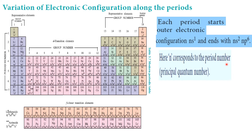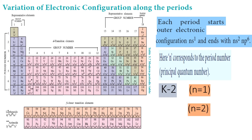The general configurations are ns1, ns2, ns2 np6, where n corresponds to the period number — also called the principal quantum number. The principal quantum number N indicates the energy level of the electron in the atom. When N equals 1, that is the K shell, with a maximum of 2 electrons. When N equals 2, that is the L shell, with 8 electrons using the 2n² formula.